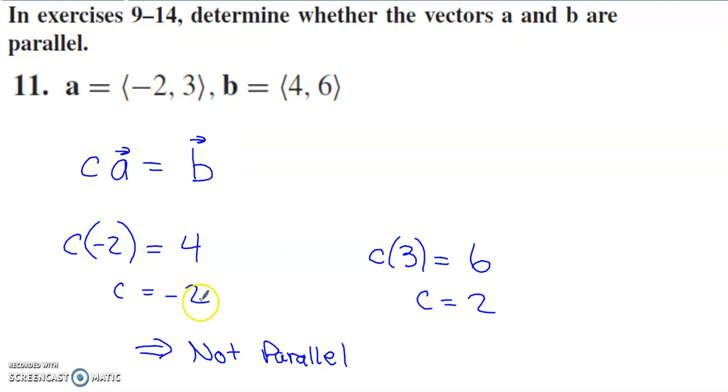We'll do the same testing with the y components. To go from this y component to this y component, multiply by 2, not by negative 2. These values of c that we came up with are not the same, so there is not one number that we can multiply this vector by to generate this vector. That tells us they are not scalar multiples of each other, and therefore not parallel.